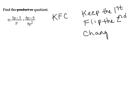Let's take a look at our example here. So I've got (5p-5)/p divided by (8p-8)/(8p²). Okay, so I have to keep the first fraction, so I'm going to write it out as (5p-5)/p. Notice I haven't factored anything yet.